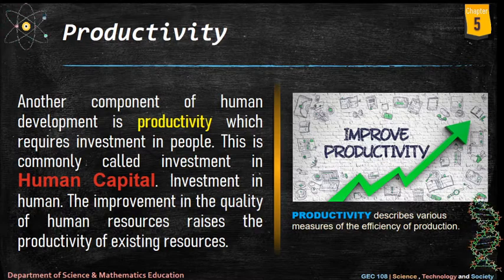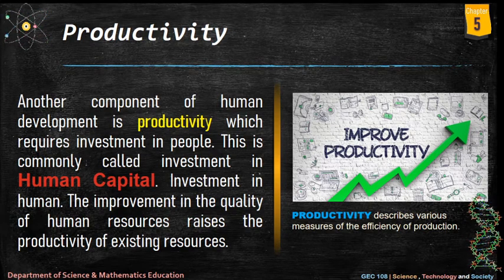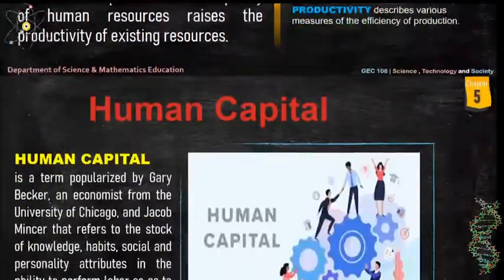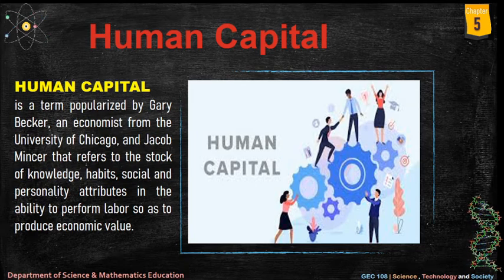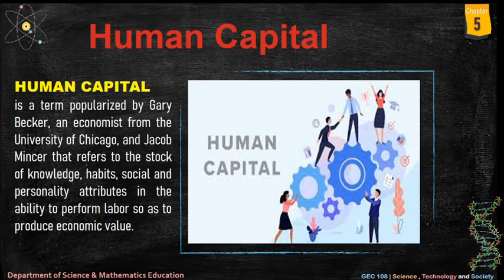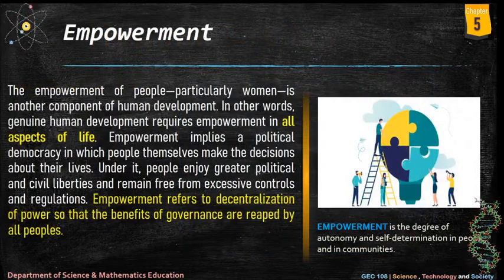Another component of human development is productivity, which requires investment in people — commonly called investment in human capital. Improvement in the quality of human resources raises the productivity of existing resources. Productivity describes various measures of the efficiency of production. Human capital is a term popularized by Gary Becker, an economist from the University of Chicago, and Jacob Mincer. It refers to the stock of knowledge, habits, social and personality attributes, and the ability to perform labor so as to produce economic value.